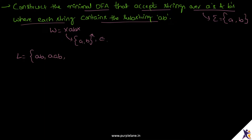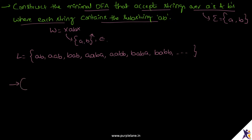AAB, BAB, AABBA, AABB, BABBA, BABB, and so on. Since the language does not have epsilon, the empty string, the initial state will not be the final state.